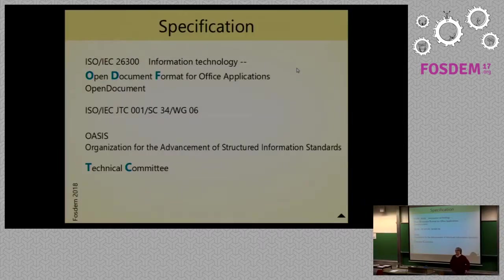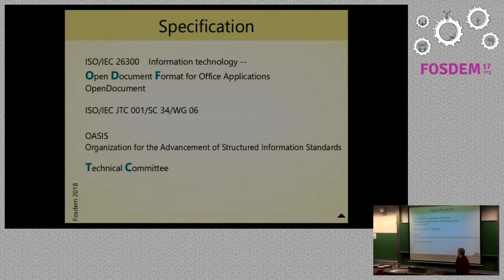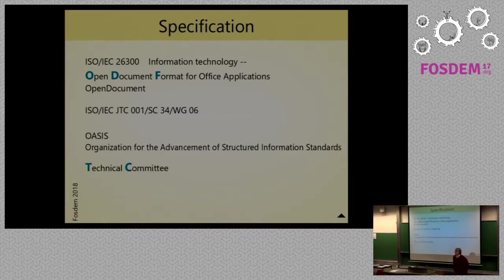First, a little bit about the specification. ODF is a specification for file formats for office documents. Version 1.2 has been published as an ISO standard in June 2015. Subcommittee 34, and therein work group 6, is responsible for it. This subcommittee has a scope of document descriptions and processing languages, and it deals with Office Open XML and EPUB as well.